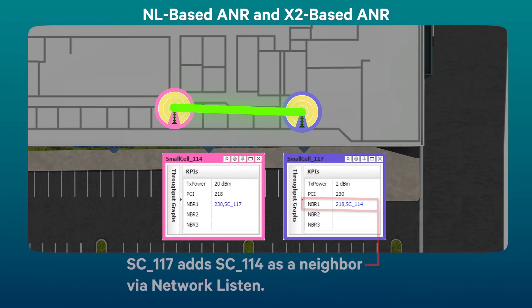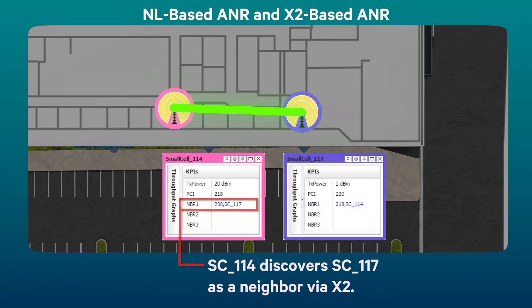Small cell 117 discovers small cell 114 via network listen and adds it to the neighbor list. In turn, small cell 114 discovers 117 as a neighbor via X2.